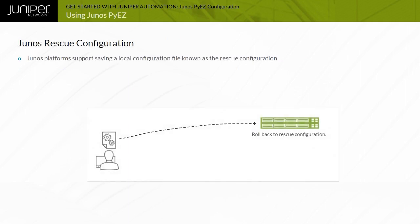A Junos rescue configuration is an additional, locally stored configuration file. A rescue configuration is generally a minimal, known-good configuration that can be loaded and committed in case of emergency. Administrators can then connect to the device, load a complete configuration, and return the device to service.